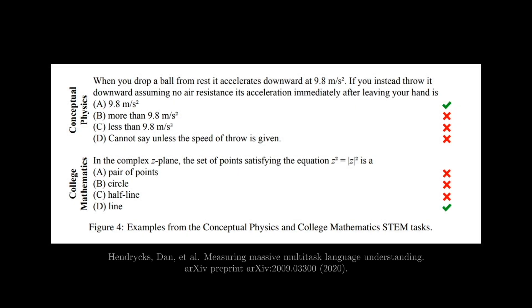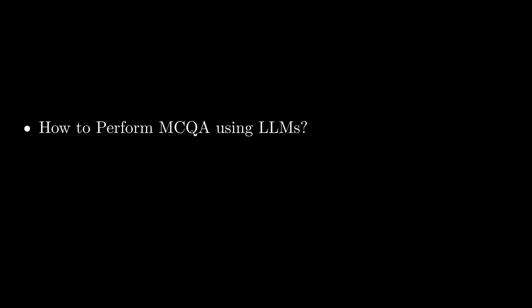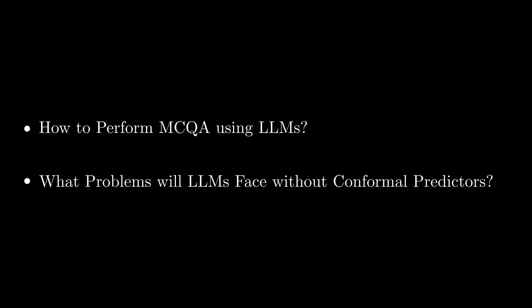Imagine the task of multiple choice question answering, where we have a question and four possible answers, and the objective is to select the correct answer. There is a benchmark dataset for the task that includes multiple choice questions from different domains ranging from STEM to humanities and medicine. Our focus is around two key aspects: understanding how language models can be used to tackle this task, and examining the challenges that arise when LLMs are used without the support of conformal predictors.